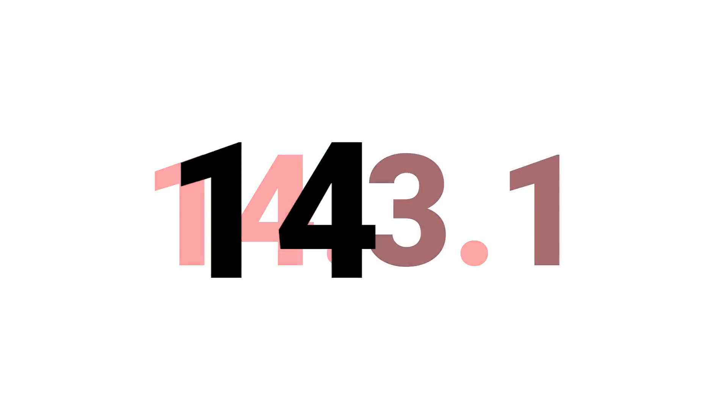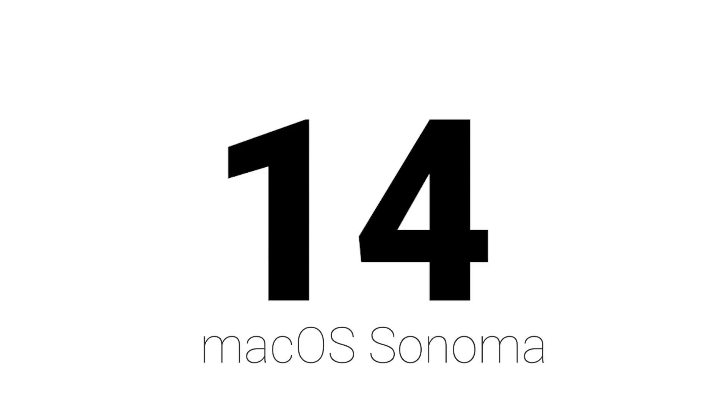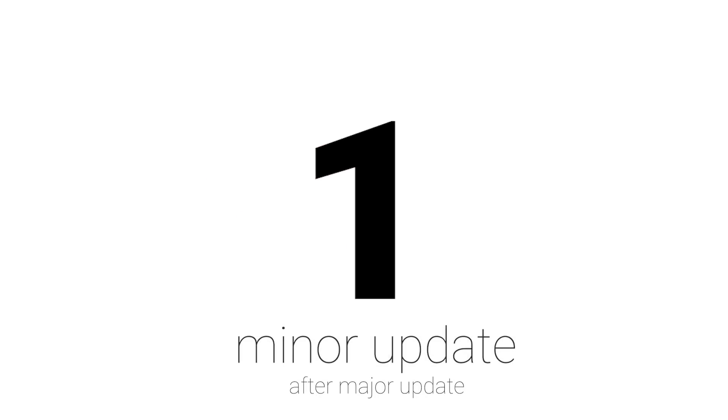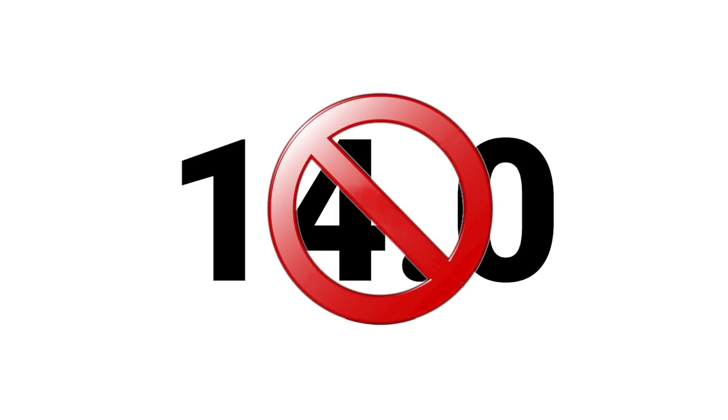You can determine which update type you have by looking at the full version number. For example, on February 8th, Apple released Mac OS Sonoma version 14.3.1. That first number, 14, denotes which version of the OS it is. The second number, 3, tells us that this was the third major update to this version. And that last number, 1, tells us it was the first minor update to that third major update. The very first version of the new OS was numbered 14.0, and it's this version you want to avoid. I always like to wait until at least the second major update — the .2 version.